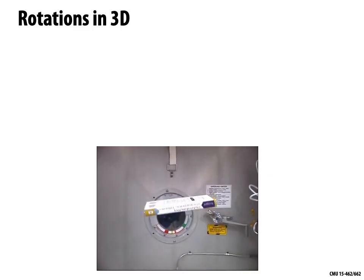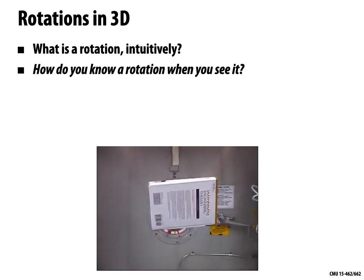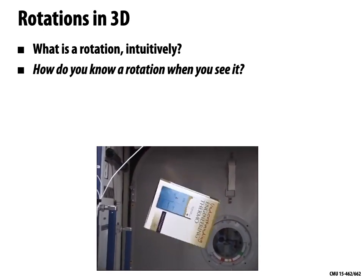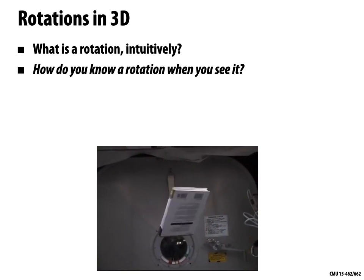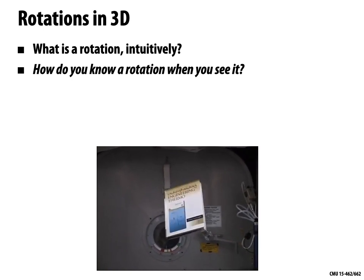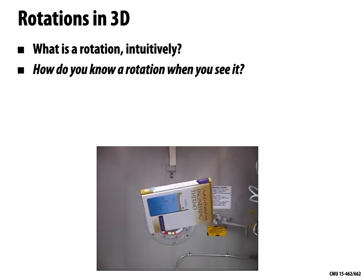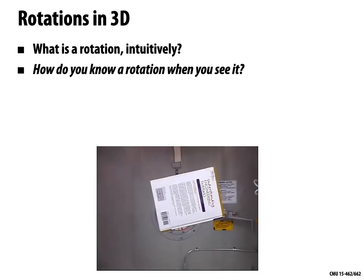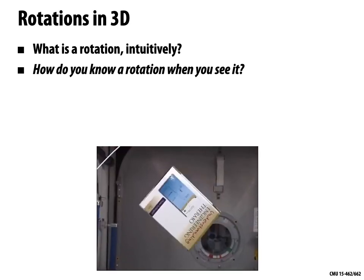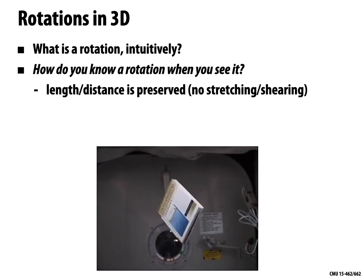Just to recap rotations — what is a rotation intuitively? How do you know a rotation when you see it? One of our big ideas last time is that different kinds of spatial transformations are not defined by some formula or matrix property, but really they're defined by the invariants that are preserved by a transformation. Which quantities stay the same when you apply that kind of transformation? For rotations, we said that lengths and distances are preserved.